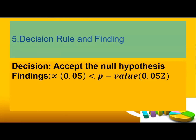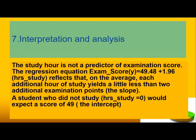Decision rule and findings: we accept the null hypothesis because alpha = 0.05 and p-value = 0.052 — the p-value is greater than alpha. Interpretation: study hours is NOT a predictor of examination score. The regression equation is: exam score y = 49.48 + 1.96 × (study hours), which reflects that on average, each additional hour of study yields a little less than two additional examination points.